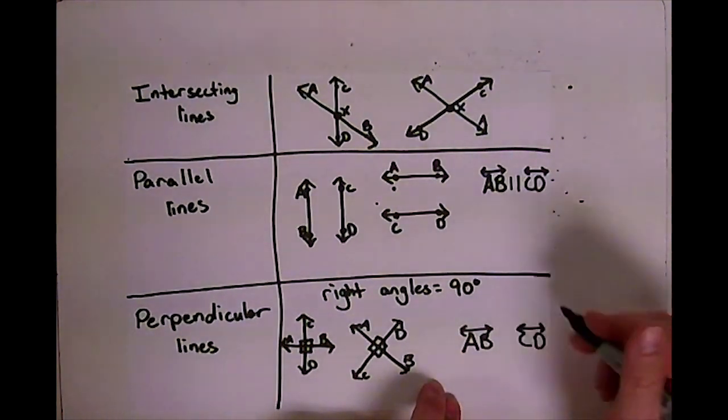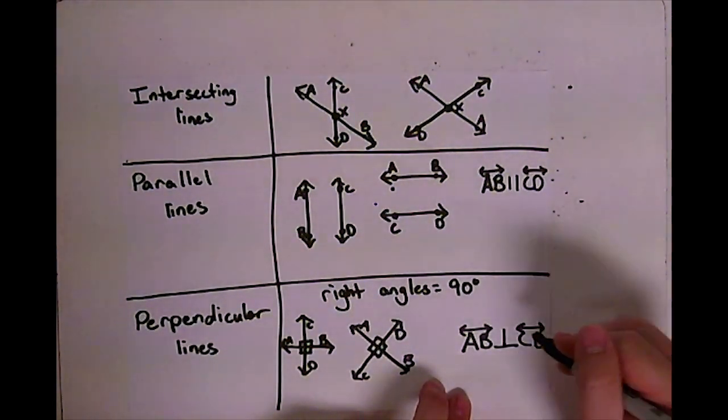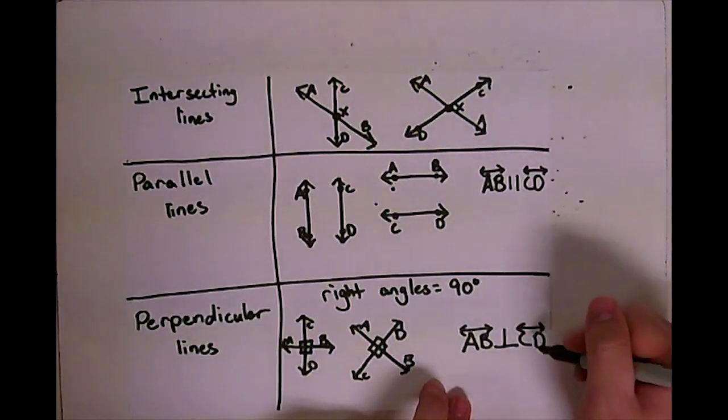And if they want to tell you that they're perpendicular, they may say line AB is perpendicular—it's kind of an upside down T—perpendicular to line CD.